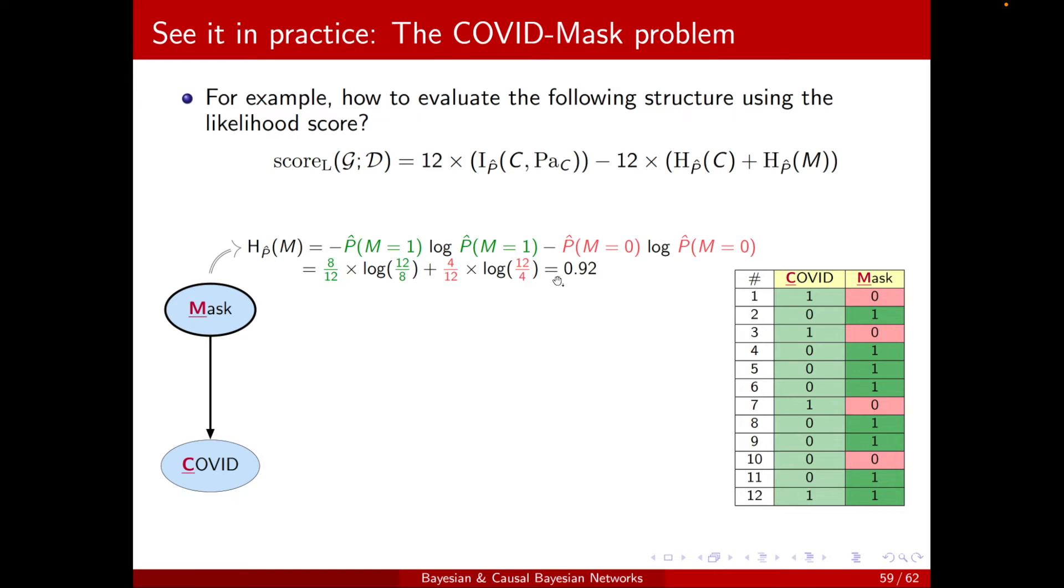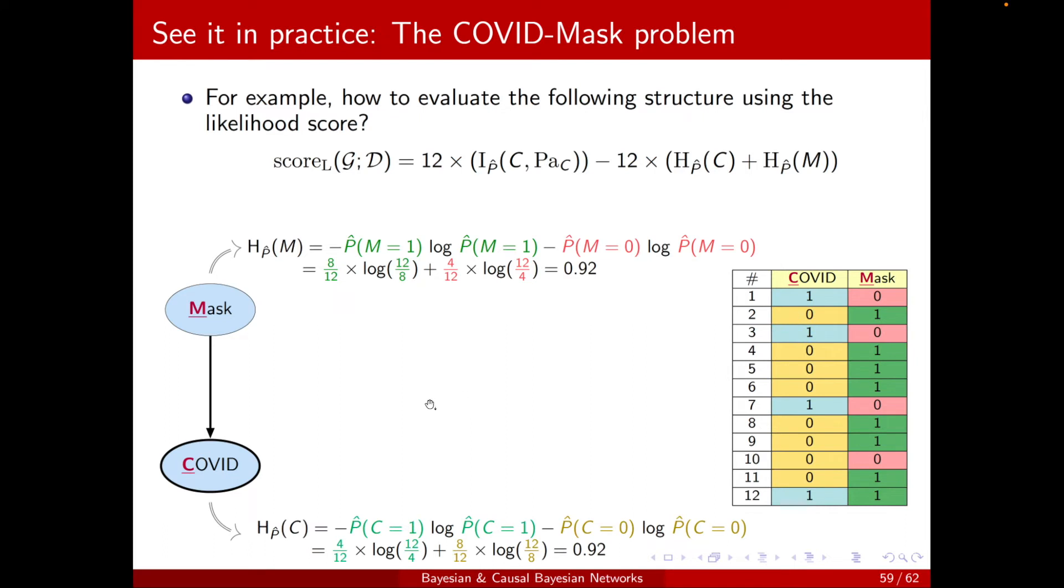and the reason is that you may see this form also for mutual information. It doesn't matter. At the end, we will get this number as the final value, and we can also calculate the entropy of C, H_P of C. Same story for C equal to 1, C equal to 0. I do the math, and this is what I will get, and we have color-coded the rows here.